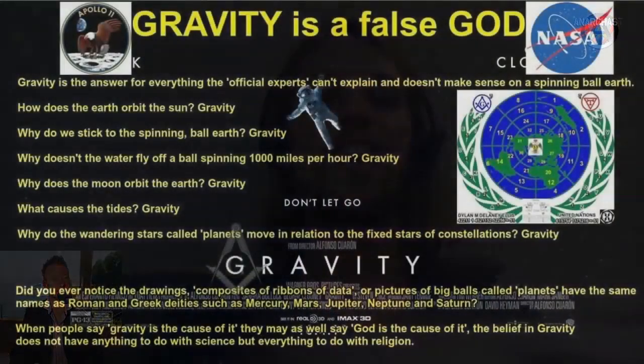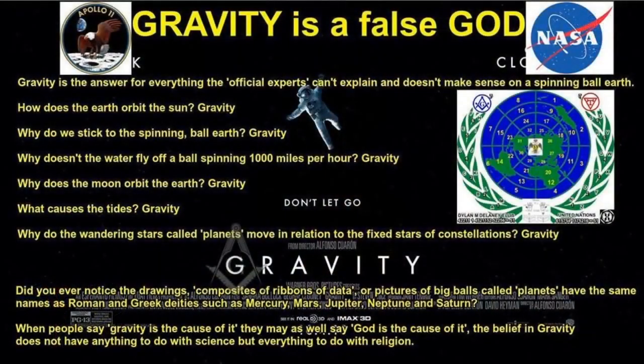Gravity is what they say caused the Big Bang somehow. Gravity is what formed the planets and the Sun. Gravity is what causes the planets to orbit around the Sun and moons to orbit around planets. Gravity is what causes the water to stick to the planets. Gravity is what causes the tides from the moon.